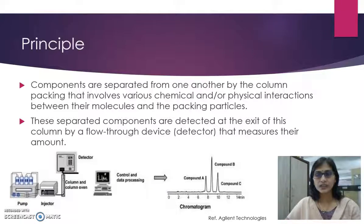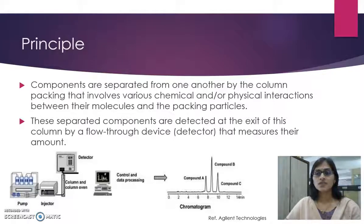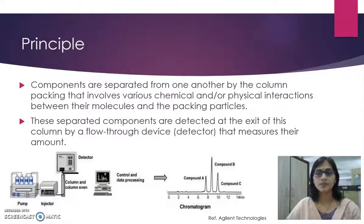HPLC is a separation technique that involves the injection of a small volume of liquid sample into a column packed with tiny particles. The particle size is around 3 to 5 microns in diameter. It is called the stationary phase, where individual components of the sample are moved down the packed column with a liquid called the mobile phase, which is forced through the column by high pressure delivered by a pump. These components are separated from one another by the column packing that involves various chemical and/or physical interactions between their molecules and the packing particles.